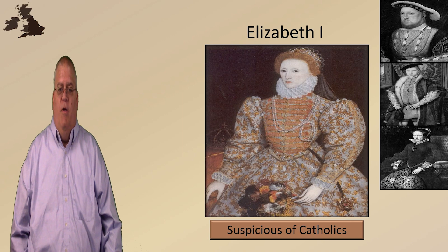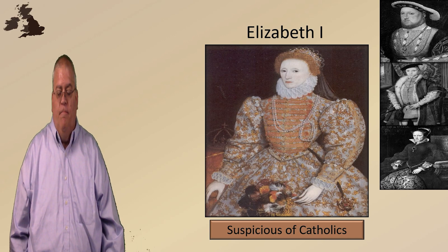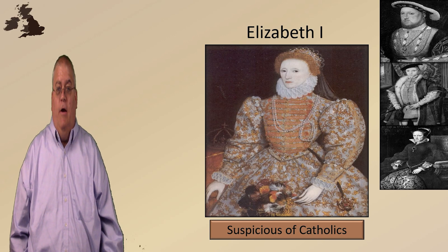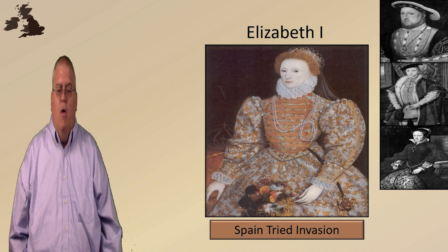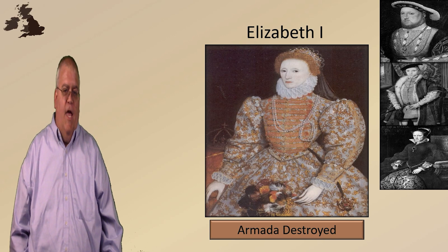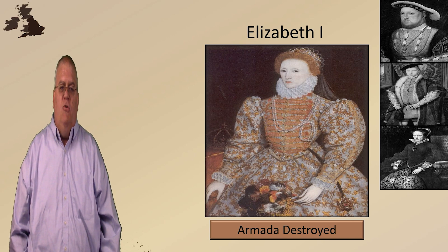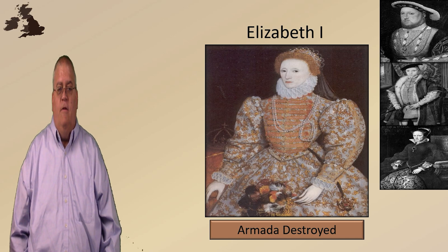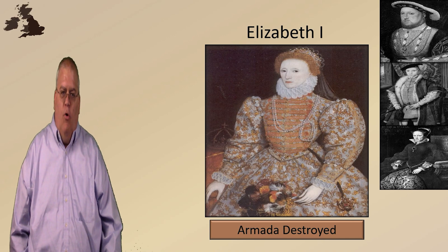The Pope excommunicated Elizabeth, and wrote that any who assassinated her with 'the pious intention of doing God's service, not only does not sin, but gains merit.' In effect, the Pope put a hit out on Elizabeth. And Spain tried to invade England to re-establish Roman Catholicism, but their armada was destroyed — partly by the English catching their ships close together in port and sending burning ships full of gunpowder into the harbor, and partly by a series of fierce storms that destroyed a lot of their fleet. The English saw this defeat of the Spanish Armada, which vastly outnumbered and outmatched the English, as a sign of divine intervention on behalf of the Protestant cause.